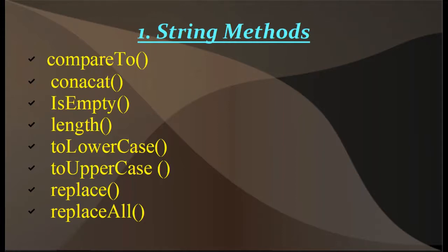The first one is compareTo. When you want to compare two strings — string one and string two — you can directly use compareTo. If you have s1 and s2, you call s1.compareTo(s2). It returns zero if they are equal, a negative number if string one is less than string two, and a positive number if string one is greater than string two.